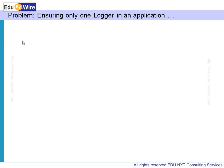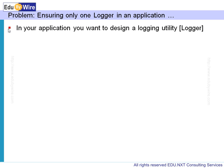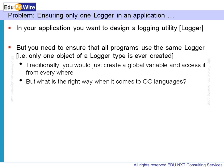We will start with the problem statement: ensuring only one logger in an application. Let's say you are designing an application where you want to design a logging utility — a logger. Logger logs various events, whether it's debugging related information, generic information, or error specific information. We need to ensure that all our classes in Java or .NET use the same logger. That means only one instance of the logger object should ever be created. If you create two logger instances, it might not work properly — it might create a couple of logging files, and that's not what you want.